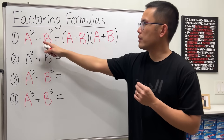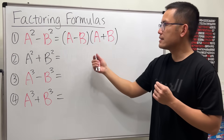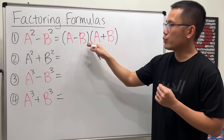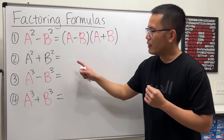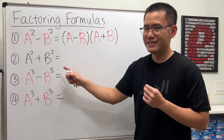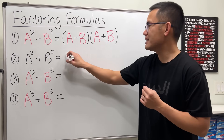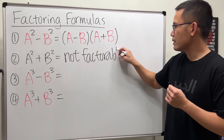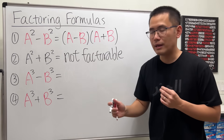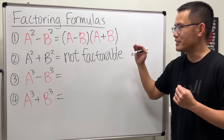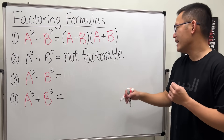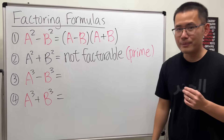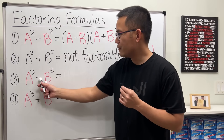This is the difference of two squares formula. If you multiply it out you will get this back, and that's how you can prove the formula. For the next one we have a squared plus b squared — this right here is not factorable. Technically not factorable with real numbers; just leave it. Some books may use the term 'prime,' meaning not factorable.